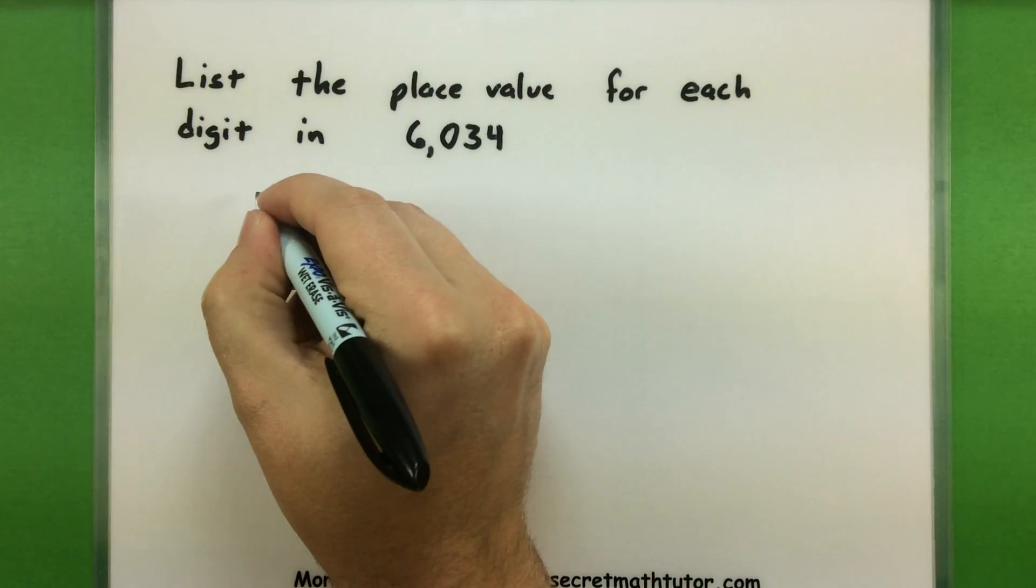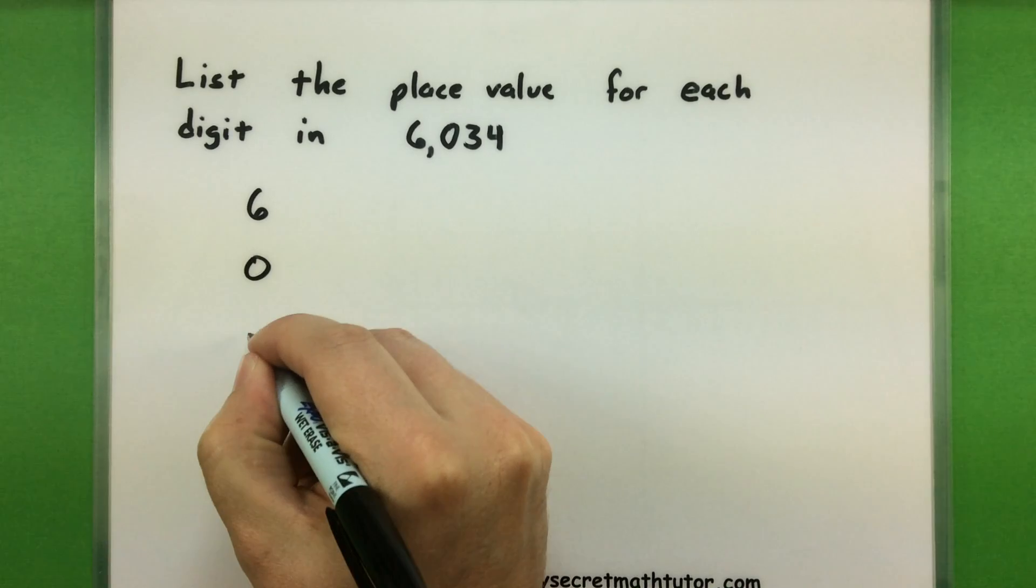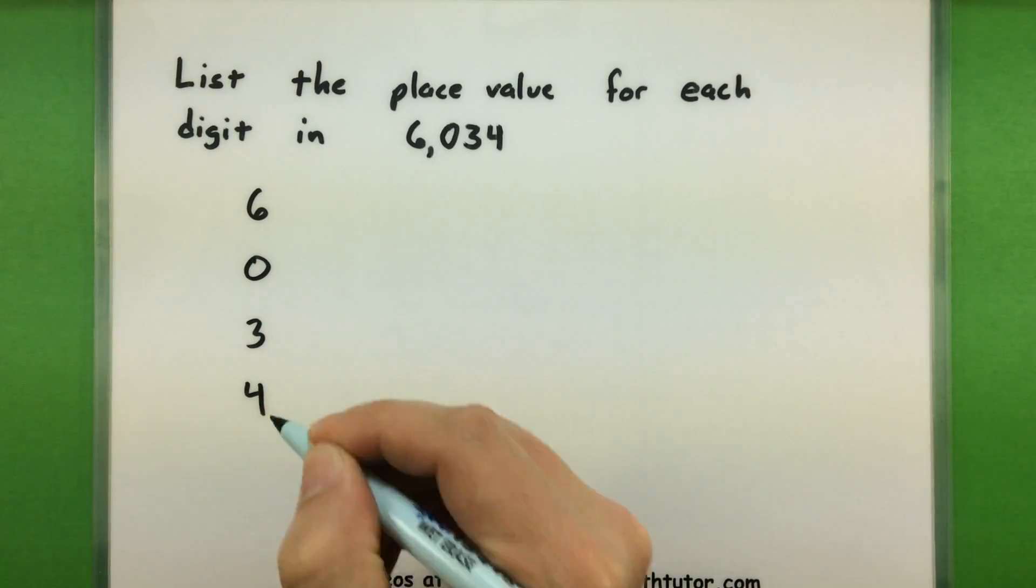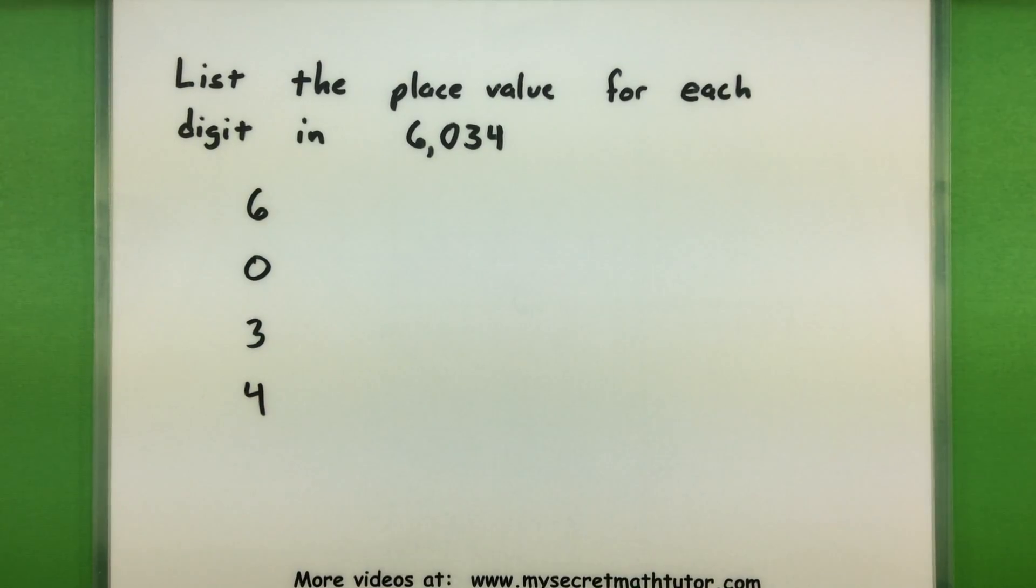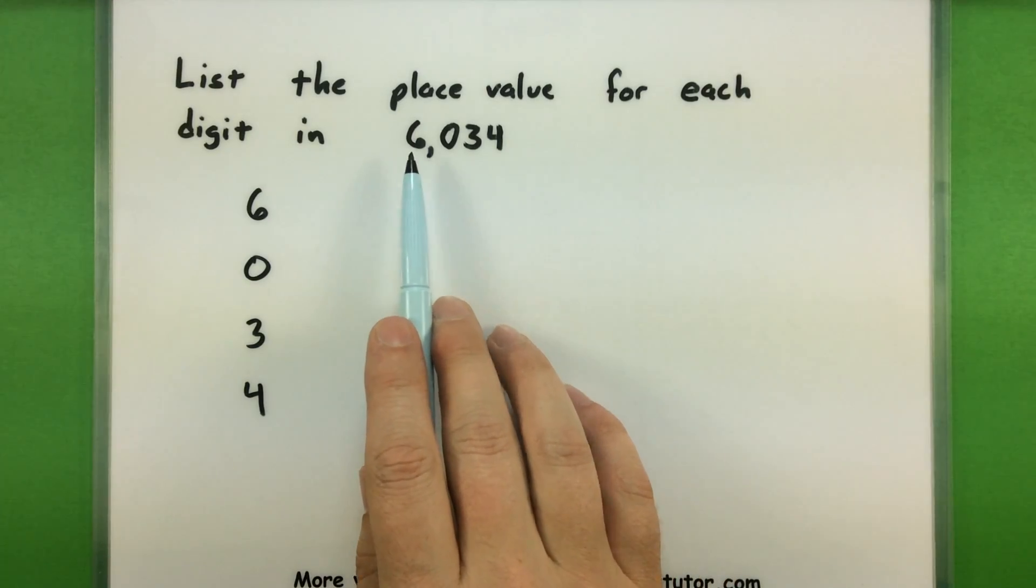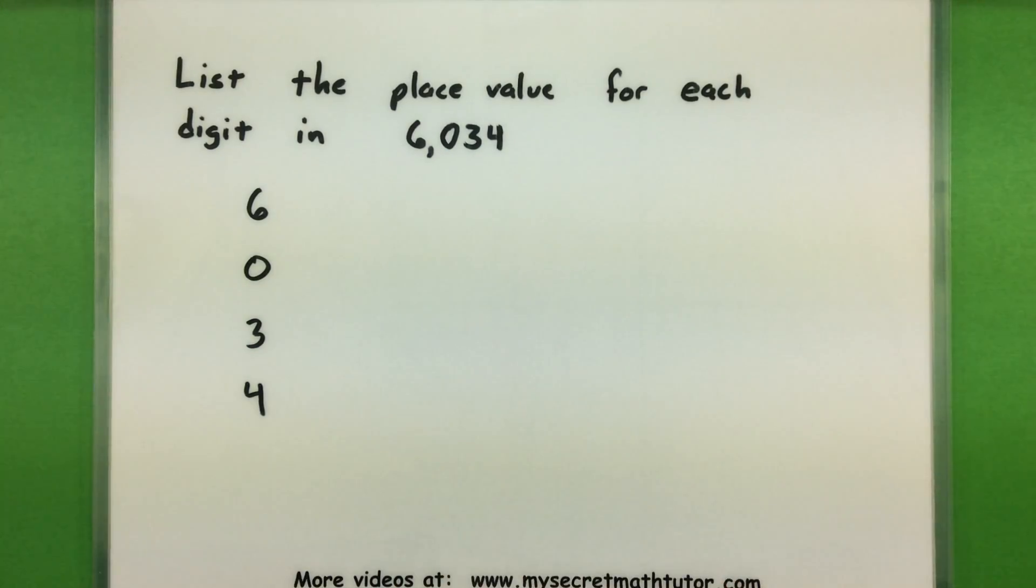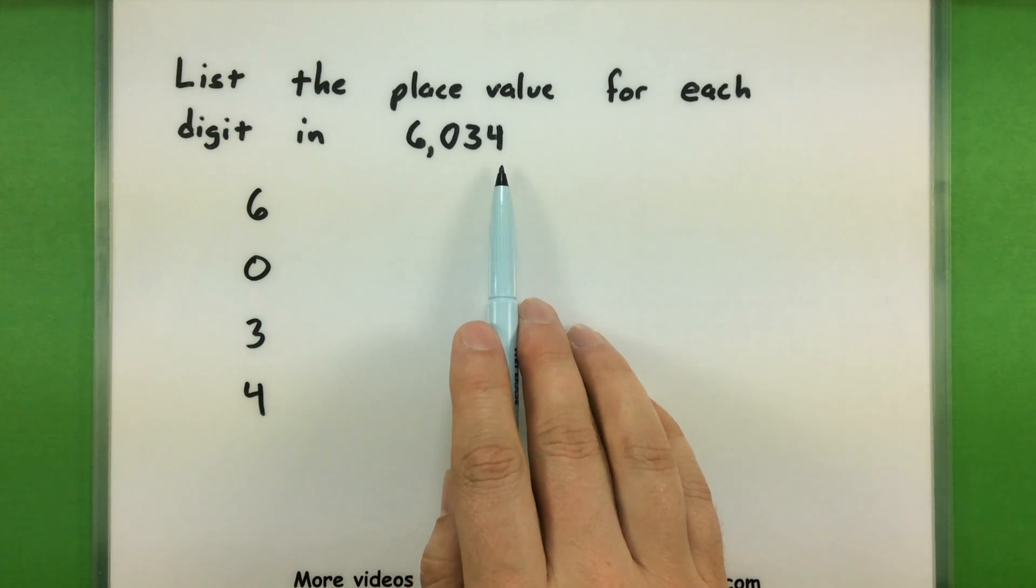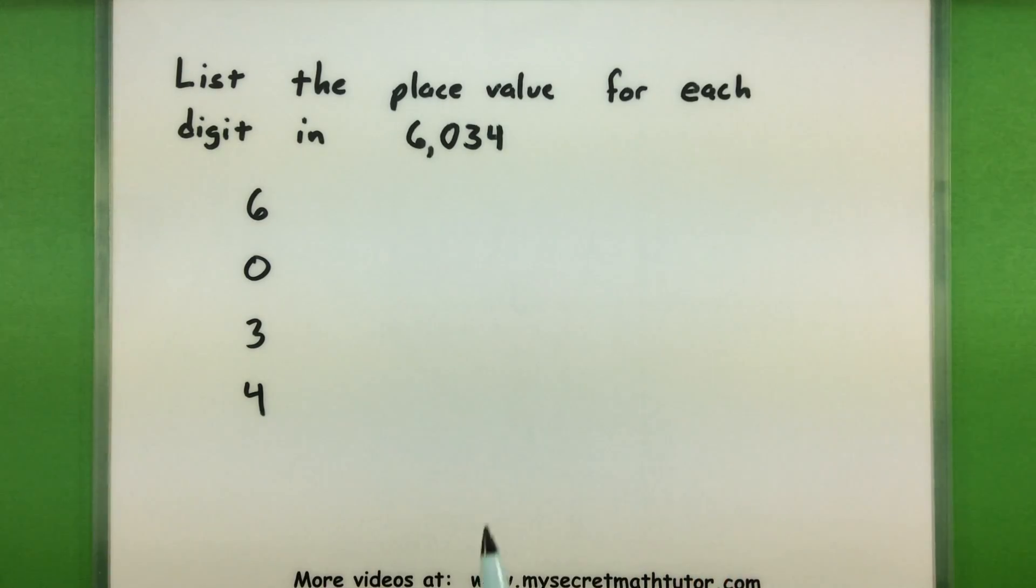Let me go ahead and just list out these digits. We have a 6, a 0, a 3, and a 4. And we'll list out what place that they are actually in. We always can start off here on the right side, and that's always going to be our ones place. And then we can bump up from there.